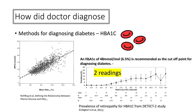HbA1c refers to glycated haemoglobin, and it's a marker of glucose control over the past three months. The more glucose present in the blood, the more the haemoglobin is glycosylated, and so the higher the HbA1c. A HbA1c of greater than 6.5% is diagnostic for diabetes. However, it's always good clinical practice to take two readings to confirm the diagnosis.